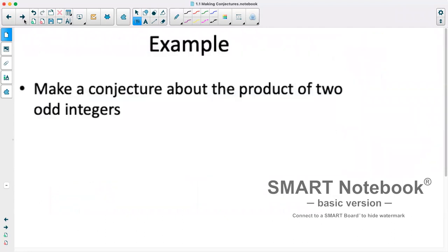Next, we have make a conjecture about the product of two odd integers. Now, in this case, we're not given any evidence, but we can come up with our own evidence. So I'm just going to choose two odd numbers and multiply them together.